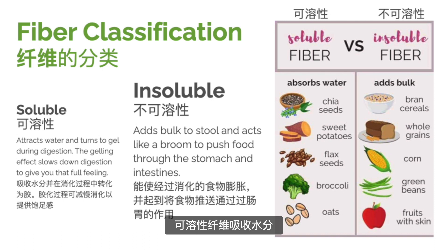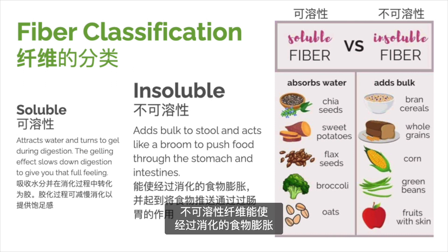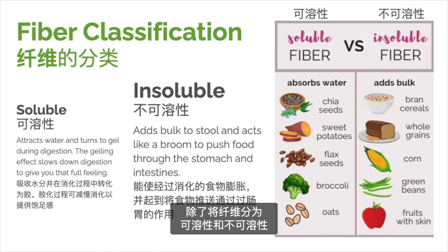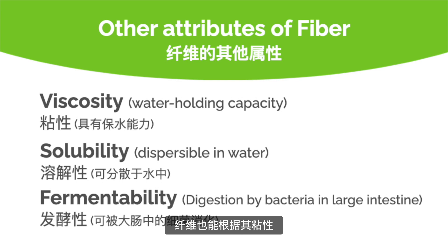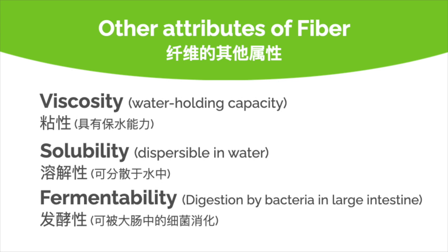Soluble fiber attracts water and turns to gel during digestion, and this gelling effect slows digestion. Insoluble fiber adds bulk to the stool and acts like a broom to push food through the stomach and intestines. Aside from classifying fiber as soluble or insoluble, fiber can also be graded according to relative viscosity, gel-forming capabilities, and fermentation rate by the gut microbiota. These other physiologically relevant parameters are a better measure of fiber's role in impacting our health. There are a variety of sources of soluble and insoluble fiber, and there are several key health benefits of both types that we will review throughout this discussion.